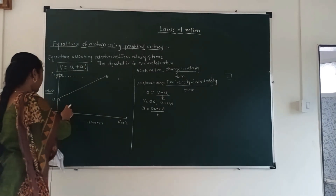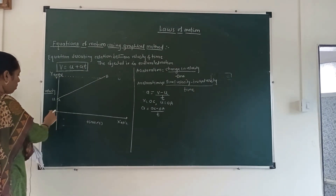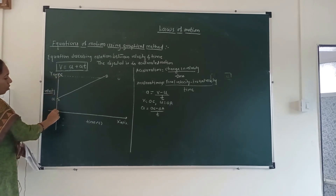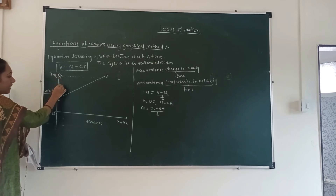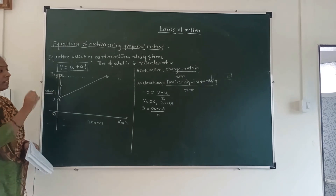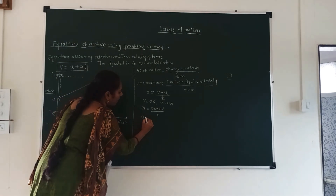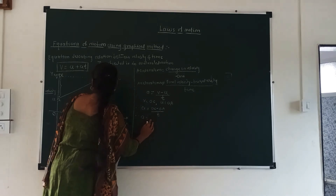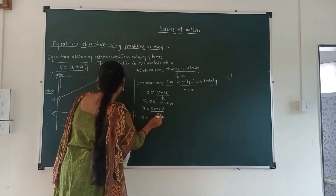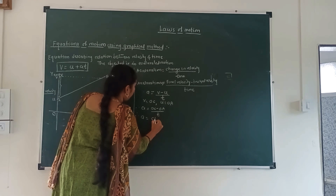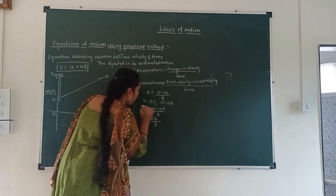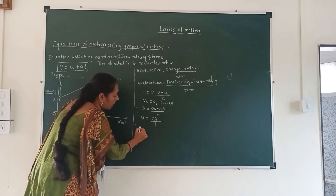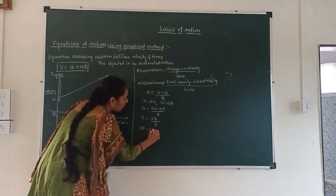Now, OC minus OA is nothing but the distance CA. Therefore I write: A is equal to CA divided by T. Rearranging this equation, it becomes AT is equal to CA. This gives us the AT part of the first equation.